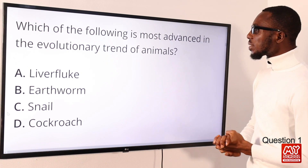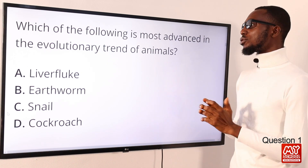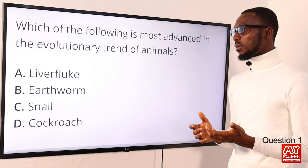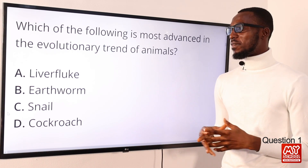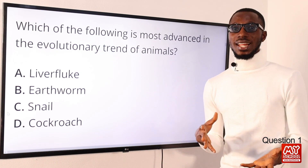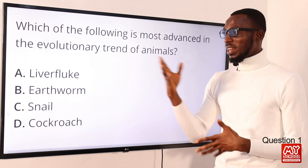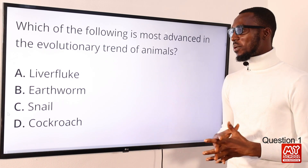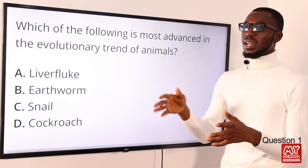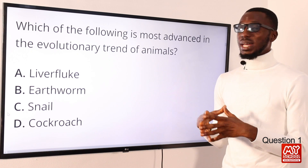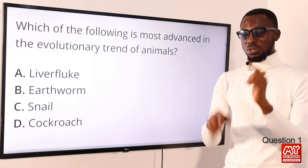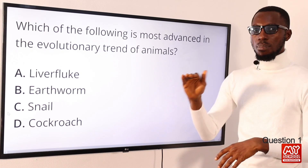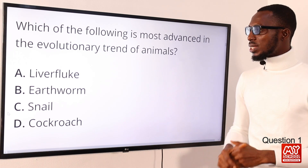Question 1: which of the following is most advanced in the evolutionary trend of animals? Starting with option A, liver fluke — it belongs to the phylum Platyhelminthes, along with others like planaria and tapeworm, Taenia solium for instance. They have organs and organ systems, and a digestive system, but it's quite simple. On the scale of development or advancement, I will put them last based on these options.